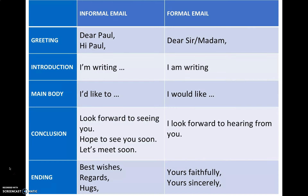Comparing informal and formal emails: Greeting — informal: 'Dear Paul' or 'Hi Paul'; formal: 'Dear Sir', 'Dear Madam', or if you know the name, 'Dear Mr.' or 'Mrs.' and the person's surname. Introduction — informal: 'I'm writing'; formal: 'I am writing' with no contractions. Main body — informal: 'I'd like to'; formal: 'I would like to' with no contractions. Conclusion — informal: 'Look forward to seeing you', 'Hope to see you soon', 'Let's meet soon'; formal: 'I look forward to hearing from you', using the complete form without abbreviations or skipped pronouns. Ending — informal: 'Best wishes', 'Regards', 'Hugs', 'Kisses'; formal: 'Yours faithfully' if you don't know the person's surname, or 'Yours sincerely' if you do.